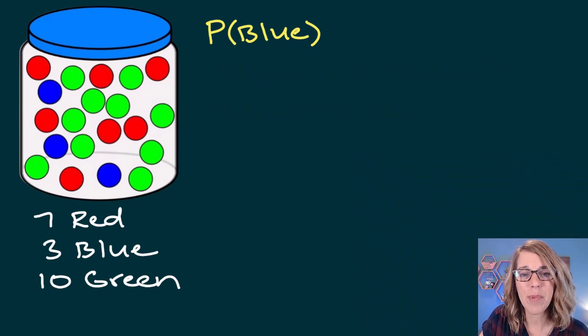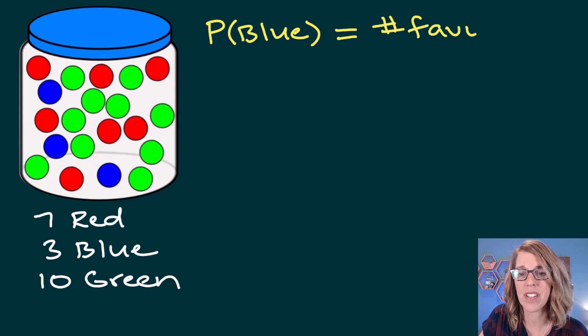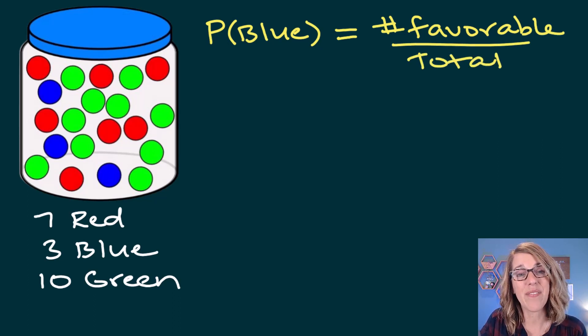To do any probability, we need to use the formula where we count up the number of favorable outcomes and divide that by the total number of outcomes. In this case, favorable is a blue, and I've got three of those.